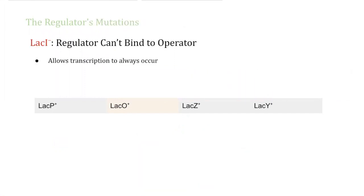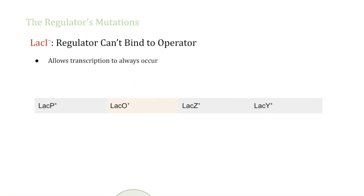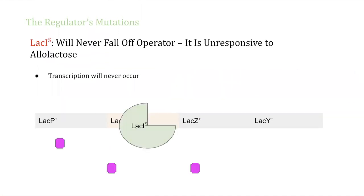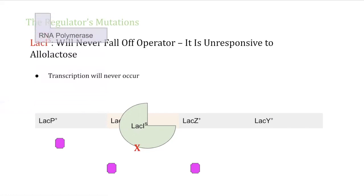The first mutation of the regulator is lacI negative. This mutation prevents the regulator from binding to the operator, as the regulator's binding site for the operator is messed up. Because the regulator cannot bind to the operator, this allows RNA polymerase to bind with the promoter and transcribe the structural genes. The second mutation of the regulator is a supermutation. This mutation causes the regulator to never let go of the operator because the regulator no longer responds to allolactose. Because supermutated regulators are always bound to the operator, they will always block RNA polymerase from being able to transcribe the structural genes.